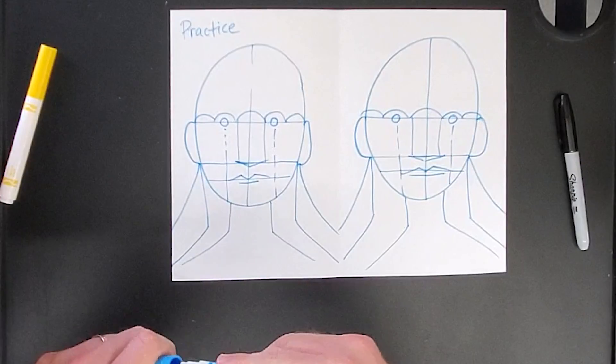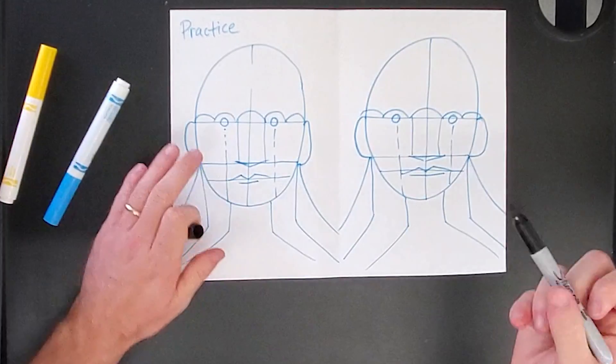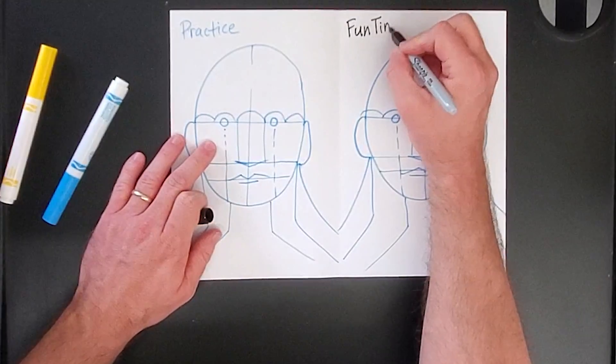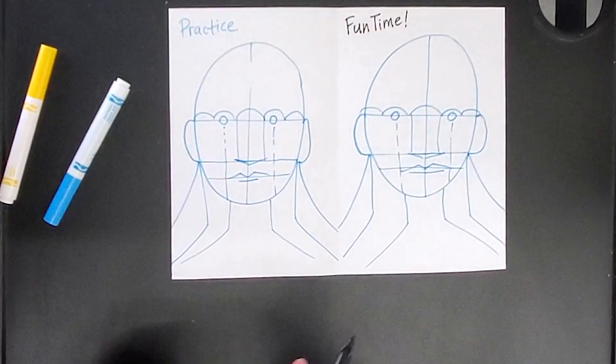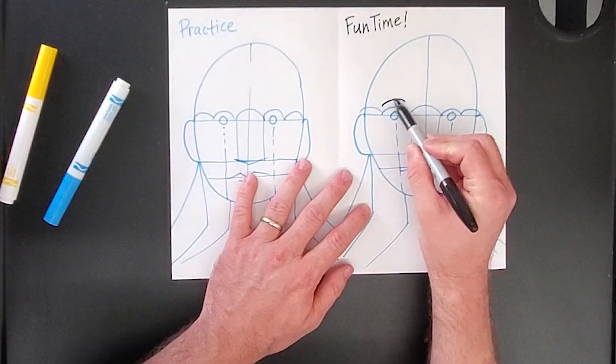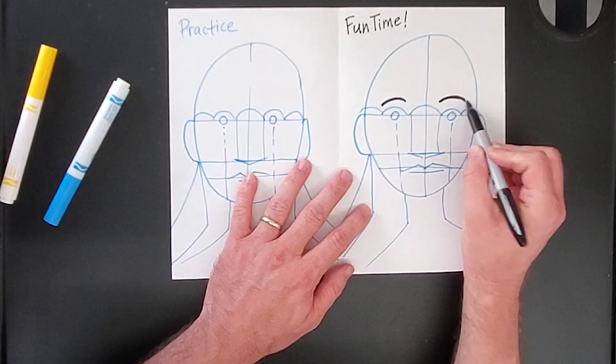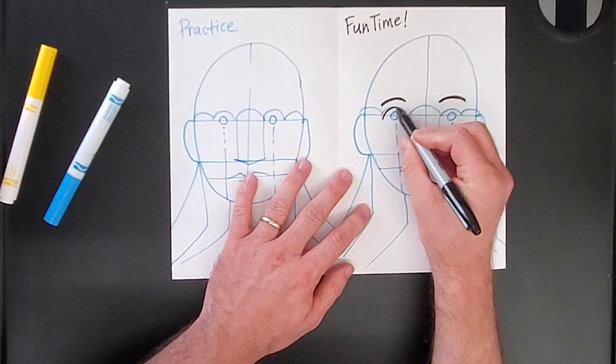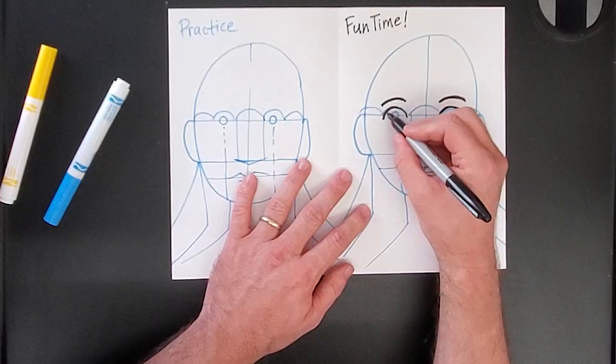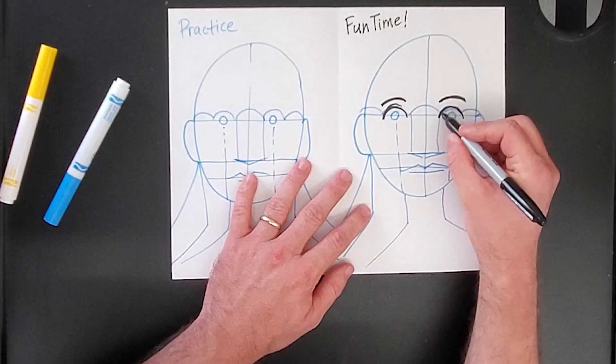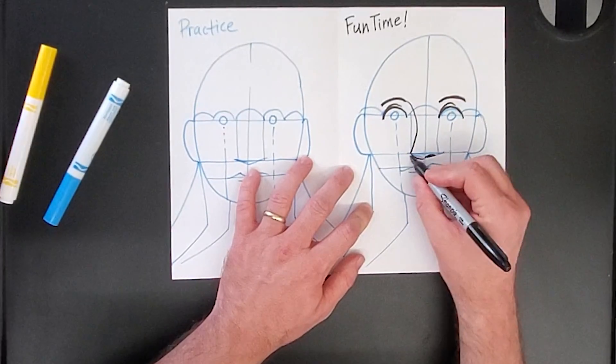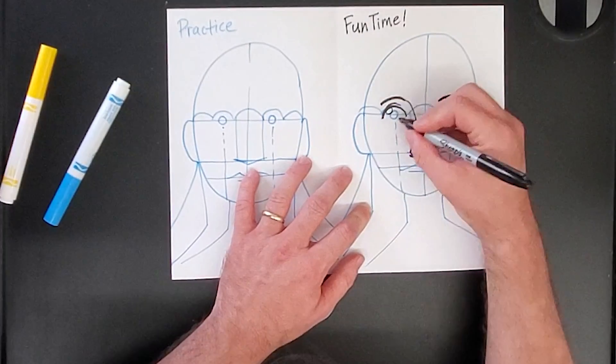The one on the left, I'm going to call practice and the one on the right, I'm going to call fun time. So with my black marker, I'm going to start adding details such as eyebrows. And I will add details to the eyes. Don't leave any part untraced because then you've just got facial features floating in the middle of nowhere. Add a nose, add some nostrils, draw a shine on the eyes, the iris, the pupil.